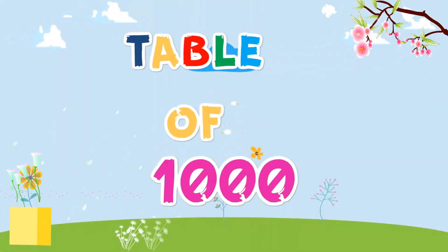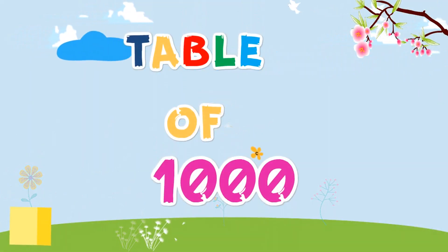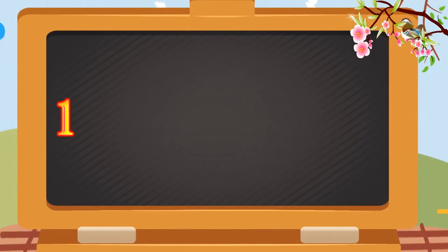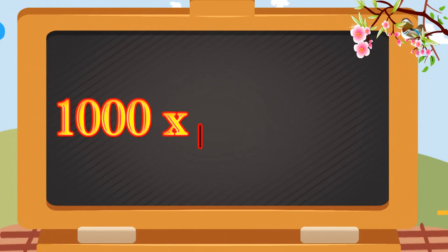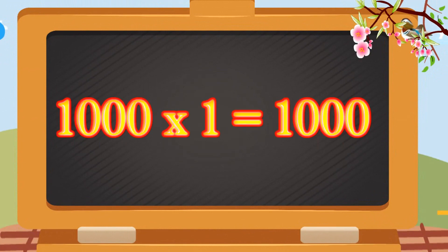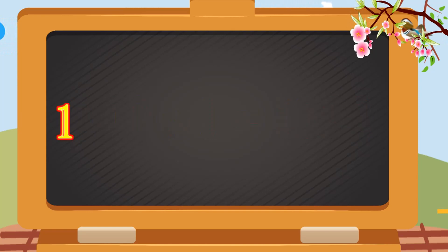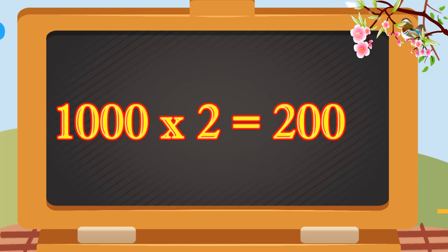Thousand ones are thousand. Thousand ones are thousand. Thousand twos are two thousand. Thousand twos are two thousand.